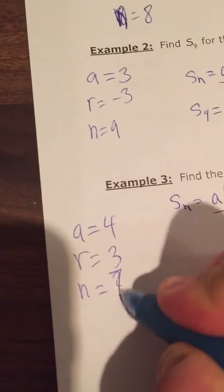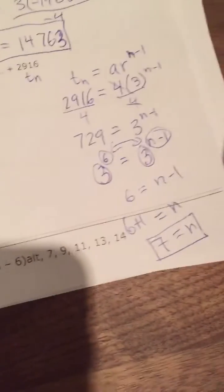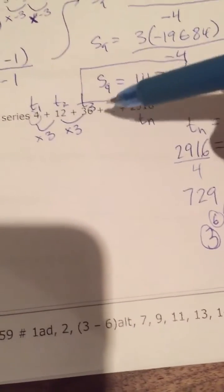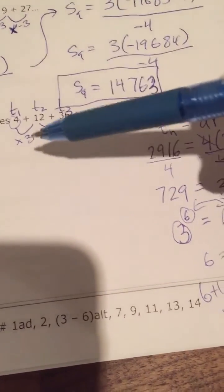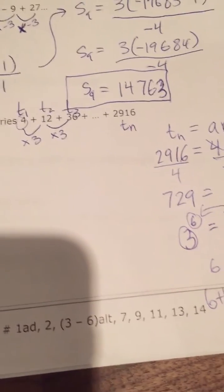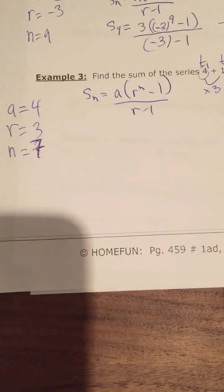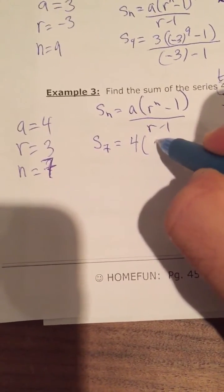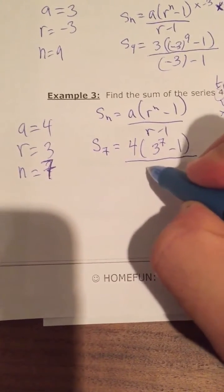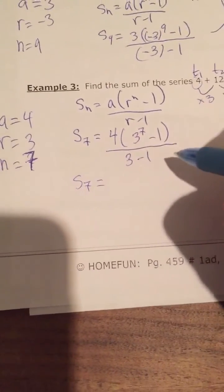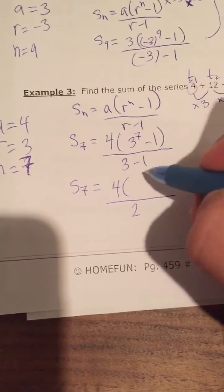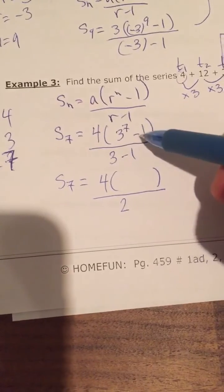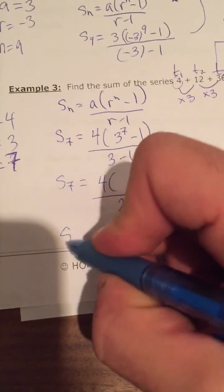Now that we know there are 7 terms, we plug into the sum formula: sum of the first 7 terms equals A which is 4, times R which is 3, to the power of 7 minus 1, all over R which is 3, minus 1. On the bottom you get 2. Figure out 3 to the power of 7, subtract 1, multiply by 4, divide by 2, and you'll get the sum of the first 7 terms.